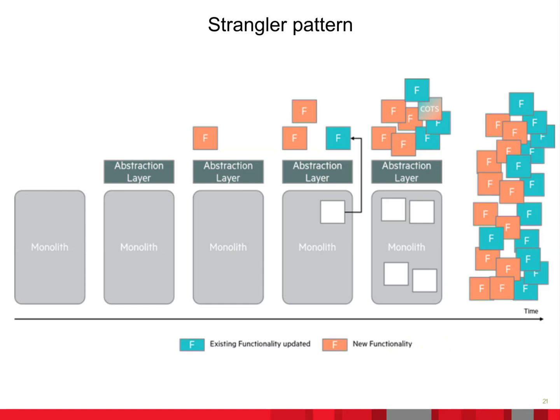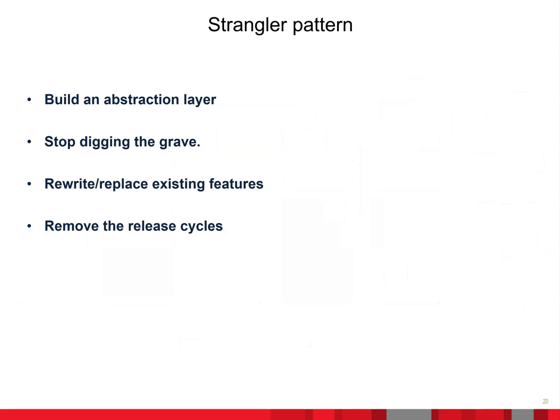There are four steps in the Strangler pattern. First, build an abstraction layer: expose APIs through which you access functionality in the monolithic application. Choose the type of APIs carefully as they will continue to be exposed after transformation. Use a web services approach — these APIs become the way to invoke functionality digitally. You may want to freeze development of the application for a month or two until you have a clear definition of the abstraction layer.